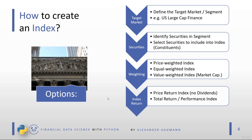The difference is that a price-return index does not include dividends. The total return of an index — like that of a stock — consists of the price return and the dividend payments. A total return or performance index includes both, while a price-return index excludes dividend payments. For most large, well-known indexes both variants exist, but one is more prominent. For example, when someone says 'the Dow Jones Industrial Average,' they typically mean the price-return index.